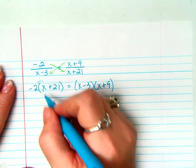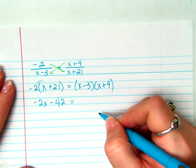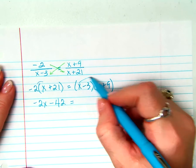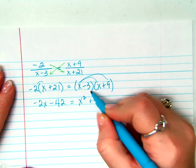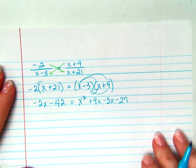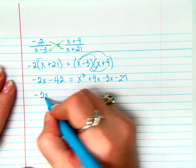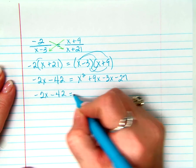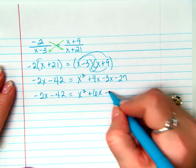So distribute here, negative 2x, distribute here, minus 42. Equals, excuse me, distribute x squared, plus 9x, minus 3x, minus 27. Now I just need to combine my like terms, and I get x squared plus 6x minus 27.